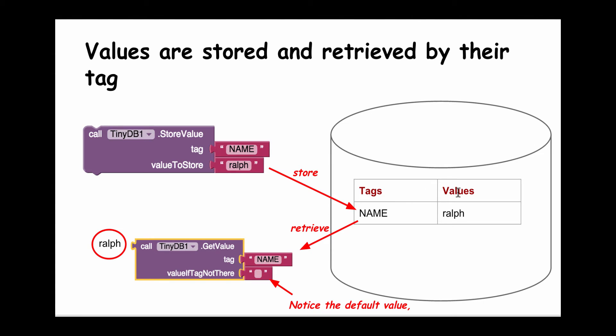One for tags, one for values, and many rows—however many rows there are for the pieces of data you've stored in it. When you want to retrieve the name Ralph from the database, you have to fire the getValue block and you need to give it the tag.